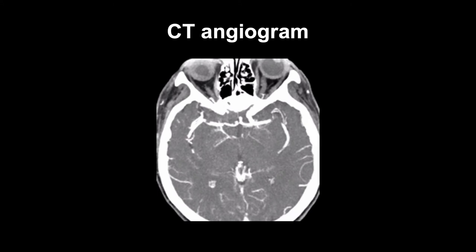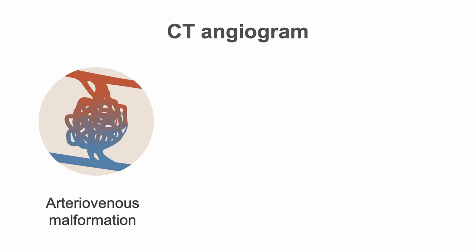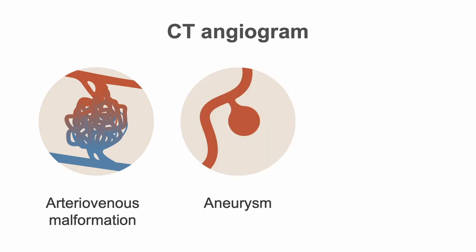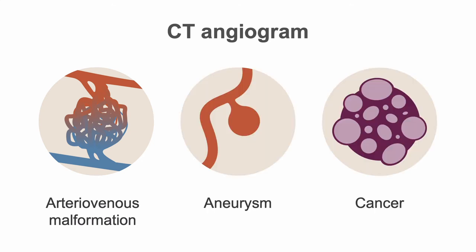If an intracranial hemorrhage is found on imaging, a CT angiogram should be performed after the initial CT, either immediately or with the follow-up CT. This is used to evaluate for entities such as arteriovenous malformations, aneurysms, mycotic aneurysm, brain tumors, and other pathologies.